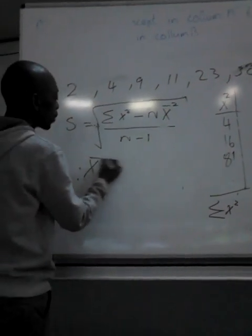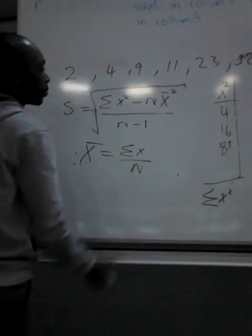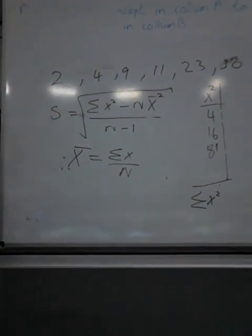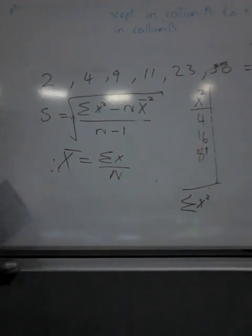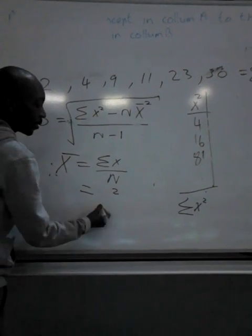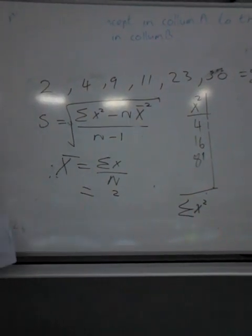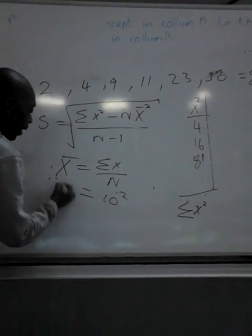So now we're going to use this one here and say sum of x over n. Yes, can you see it? And then after that, the answer that you find here, we're going to square this. So we found 10, we're going to say 10 squared so that we can have x bar.